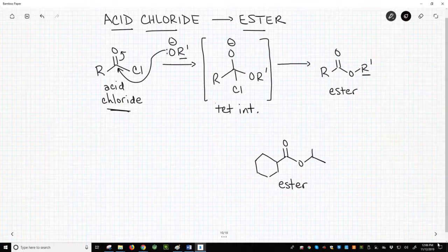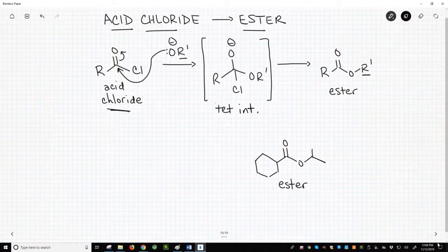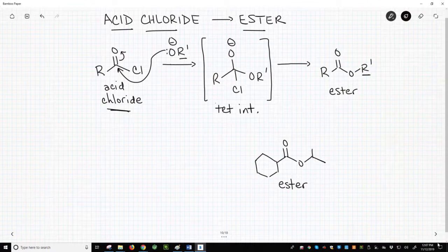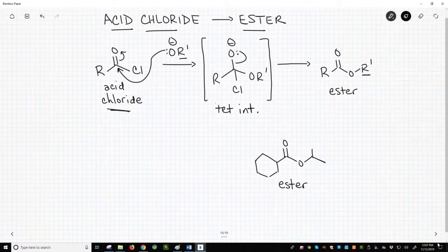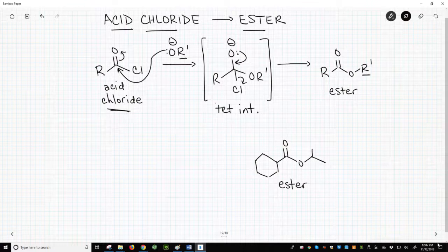The big question for a tetrahedral intermediate is, do I have a leaving group? If yes, then we kick it out and reform the carbonyl. So, do we have a leaving group? Yes, a chlorine. We use the O- to kick it out and reform the carbonyl.